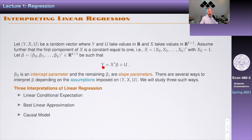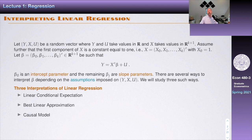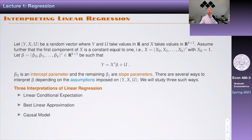In this notation, beta_0 is typically called the intercept or constant term, and the other beta_j's are slope parameters. What we're going to talk about today is the fact that there are several ways to interpret beta, depending on what assumptions we make about x, y, and u. We're going to discuss three different ways: the linear conditional expectation interpretation, the best linear approximation interpretation, and the causal interpretation. Once we do this, we'll describe a representation for beta, and then discuss how to estimate beta if we observe a sample of data.